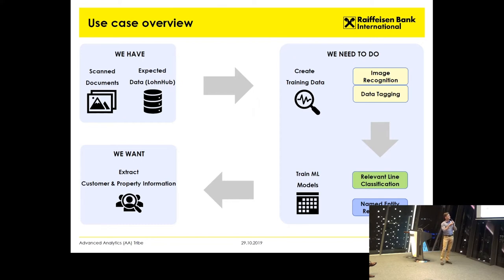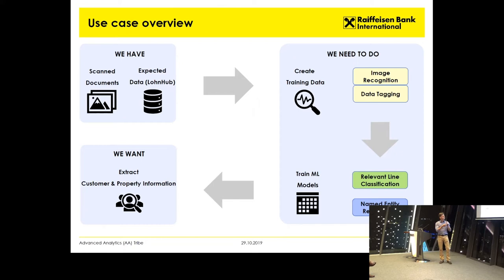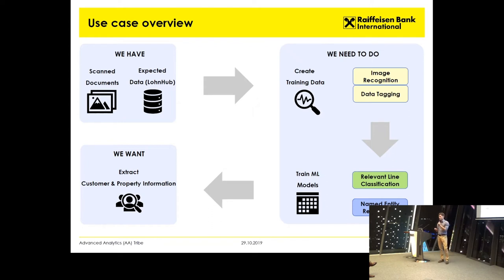That's why we developed the following pipeline. The first step would be to recognize the image itself — the scan or photo of the document. The second part would be to prepare the training data, which in this case is called data tagging. Finally, we will apply two statistical models: one to restrict the scope of analysis and identify only the relevant parts of the data, and another to actually search and find the named entities.